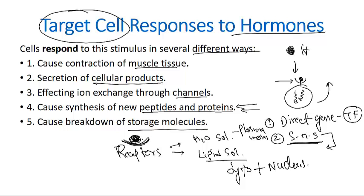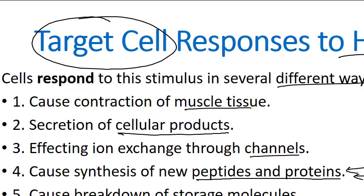On the other hand, receptors also have the ability to up-regulate and increase sensitivity in response to a sustained low level of hormones. When there is a low level of hormone, receptors have higher sensitivity, and when there is a high level of hormones, receptors have lower sensitivity — to ensure a proper amount of hormone interaction. Hormonal activity requires a very tiny amount; not all cells have receptors for all hormones, and some cells respond differently to different concentrations.